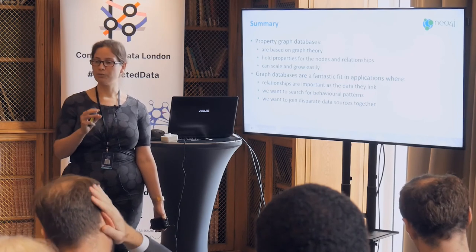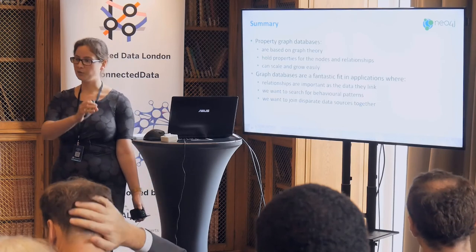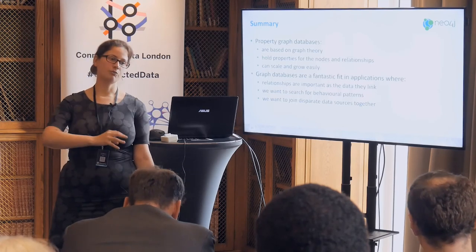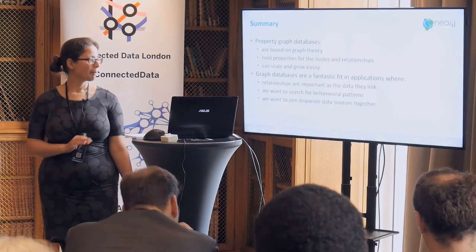We want to search for behavioural patterns — either a specific pattern like a recommendation engine context, or general points of interest such as highly connected parts of the graph. In a social setting that could identify an influencer; in fraud it could flag a group redistributing information. And we want to join disparate data sources together — rather than worrying about normalisation and data model definitions, we can start joining nodes from different sources and grow or alter that model as we get more information and better understanding of where we want to go.